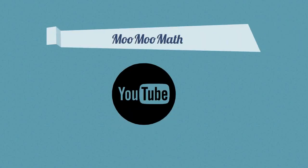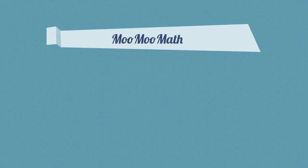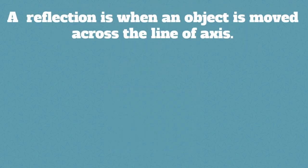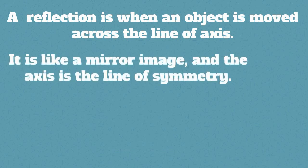Welcome to MooMooMath where we upload a new math video every day. In this video I would like to talk about reflection on a coordinate plane. A reflection is when an object is moved across the line of axis. It is like a mirror image and the axis is the line of symmetry.